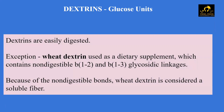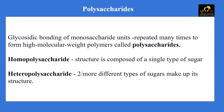Now let's look at polysaccharides. By definition, they involve glycosidic bonding of monosaccharide units repeated many times to form higher molecular weight polymers. If the structure is composed of a single type of sugar, it is called a homopolysaccharide. If it contains two or more different types of sugars, the structure is termed a heteropolysaccharide. Homopolysaccharides are of far greater nutritional importance due to their abundance in natural food.